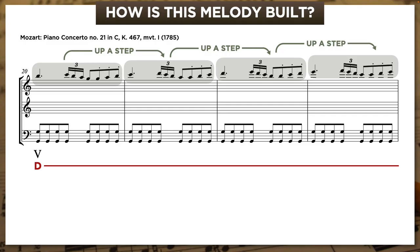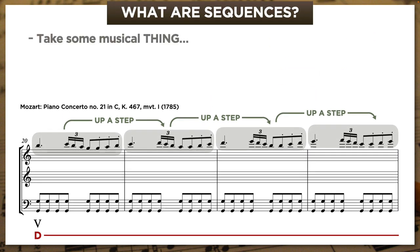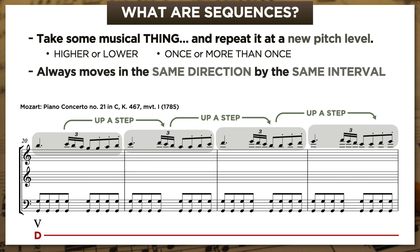And it was in that fever of inspiration that Mozart made what we call a sequence. To make a sequence, you take some musical thing—a motive, a chord progression, a whole contrapuntal texture—and then you repeat it at a new pitch level. Maybe higher, maybe lower, maybe once, maybe more than once. But if you repeat it more than once, it has to move in the same direction by the same interval. That's what Mozart did here.